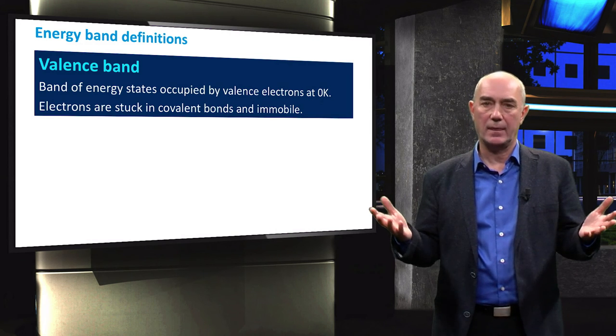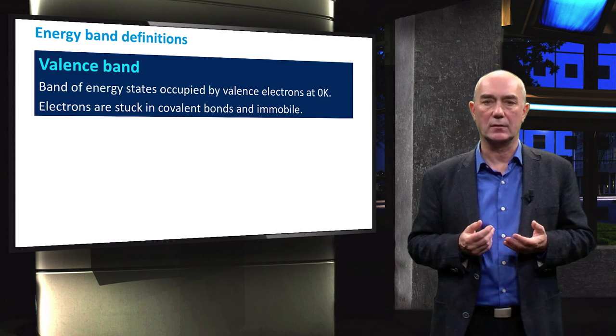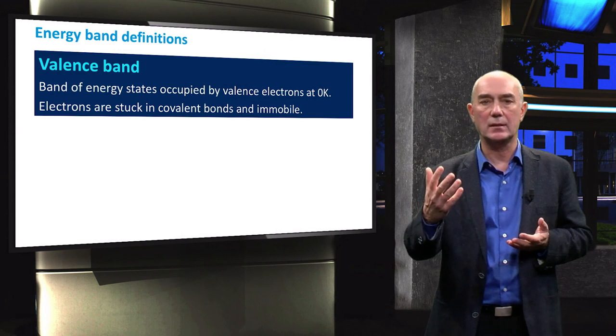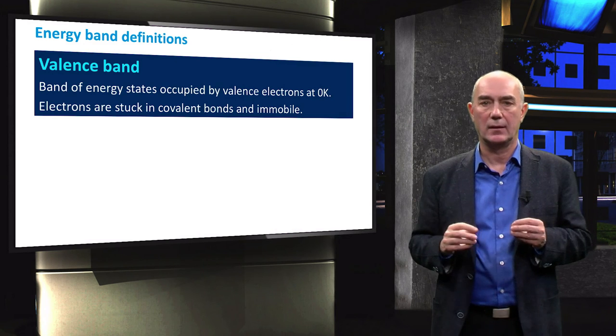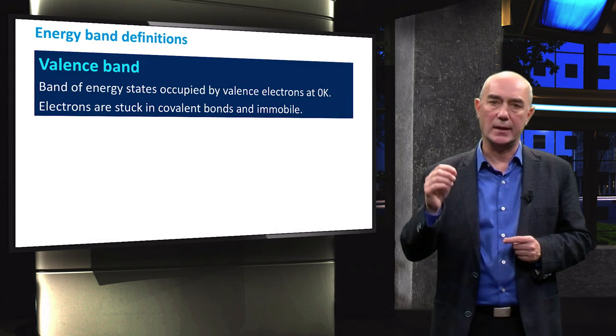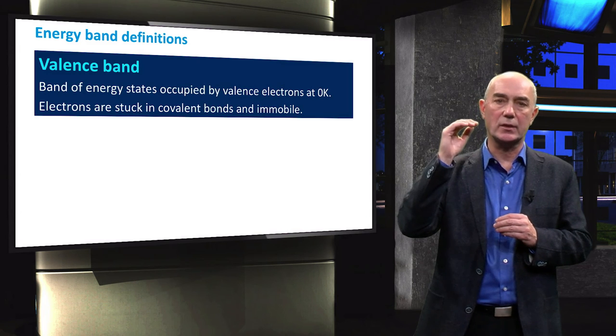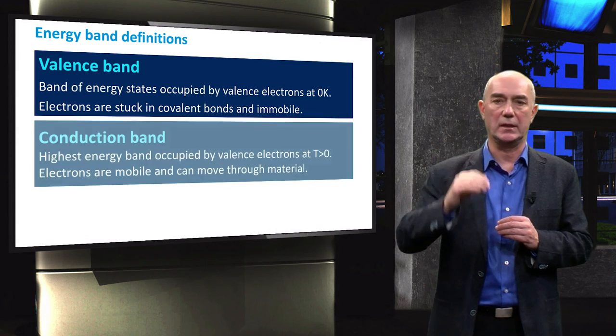So electrons occupying energy states in the valence band are fixed in the lattice and cannot move around. However, when supplied extra energy, for example in the form of heat, they can be excited and leave the bond. When this happens, they gain energy and fill available energy levels in the conduction band.